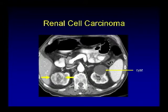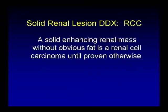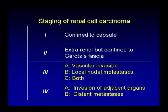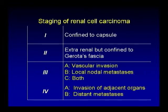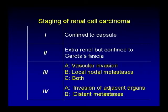The rule is: a solid enhancing mass without obvious fat is a renal cell carcinoma until proven otherwise. In terms of staging renal cell carcinoma, what's relevant for oral boards is to know stage three and four. Stage three is divided into vascular invasion and nodal metastasis, and we make the distinction because of different prognosis between the two, and obviously distant metastasis.